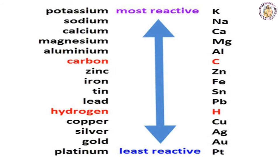To remember the activity series, use this mnemonic: 'Please Send Lions, Cats, Monkeys And Zebra Into Lovely Hot Countries Signed General Penguin.' Here, 'Please' stands for Potassium (K), 'Send' for Sodium (Na), 'Lion' for Lithium (Li), and so on. This helps you remember the order from most reactive to least reactive elements.